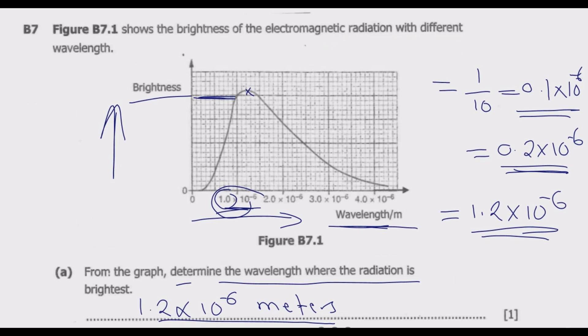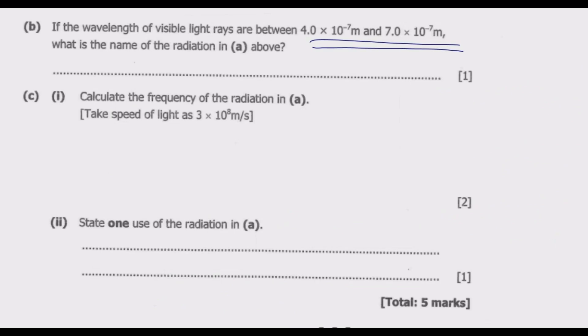For us to identify the type of this radiation, remember how to remember the electromagnetic spectrum is basically to use the phrase Rich Men In Vegas Use Expensive Gadgets. Richmond is radio, men is microwave, in Vegas is infrared, Vegas is visible light, use is ultraviolet, expensive is x-ray, and gadgets is gamma rays.